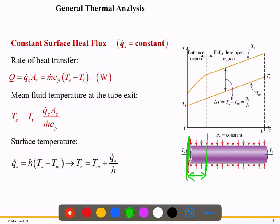Up to the entry length, the flow is not fully developed. The mean temperature, shown as the yellow line, increases linearly — that is Tm. In a real case, the surface temperature changes until the flow is fully developed, after which it changes roughly linearly. For better accuracy we track Tm from inlet to outlet with equal incremental changes.